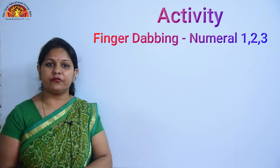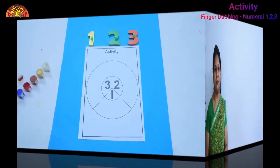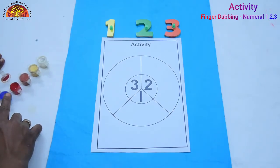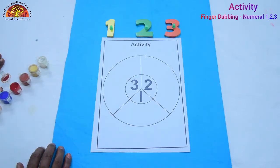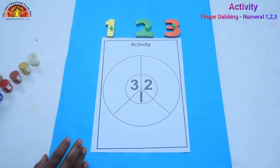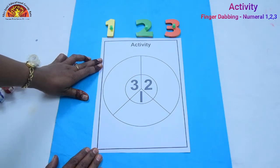So kids, now we will do an activity. Let's come. This is our activity. What we will do in this activity? We will dip our finger and dab it here. And what do we need? We need watercolors and a printout like this. So ask your mama, papa to get the printout like this.